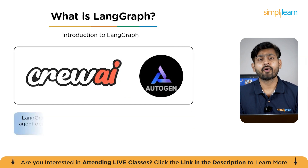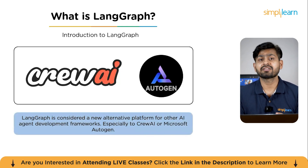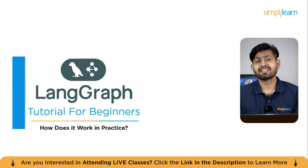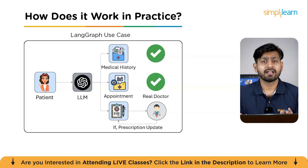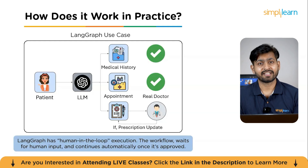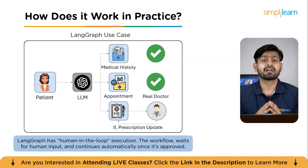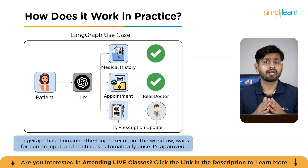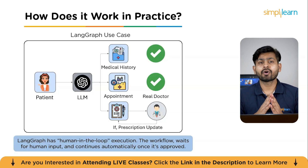Now let's look at a working example to understand principles like decision-making, knowledge base referencing, and human intervention. Imagine a virtual assistant for a healthcare clinic. A patient sends a message asking to book an appointment. The agent might check the patient's medical history, suggest available times based on their doctor's schedule, and even pre-fill a form to request a prescription renewal. But if the patient is requesting medication that requires doctor's approval, we need a human doctor or nurse to review the request. LangGraph makes this easy with human-in-the-loop execution, where the workflow can pause, wait for human input, and then continue automatically.